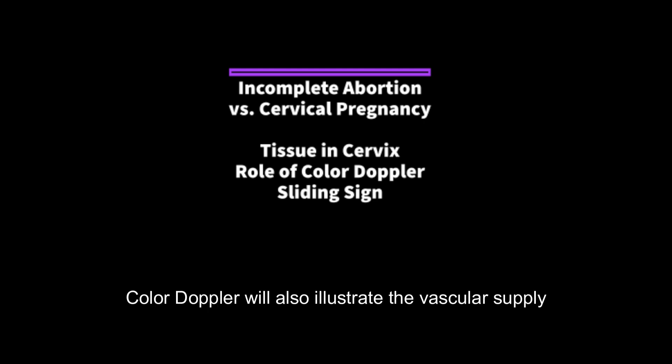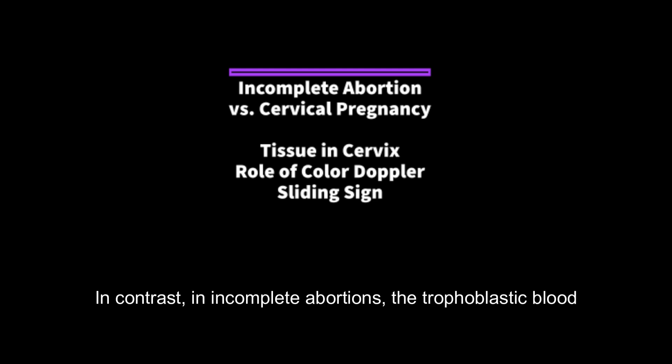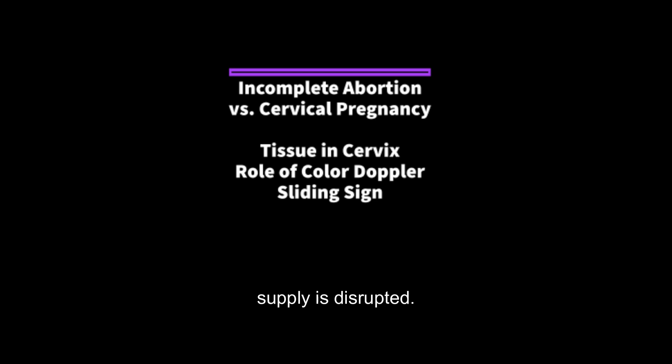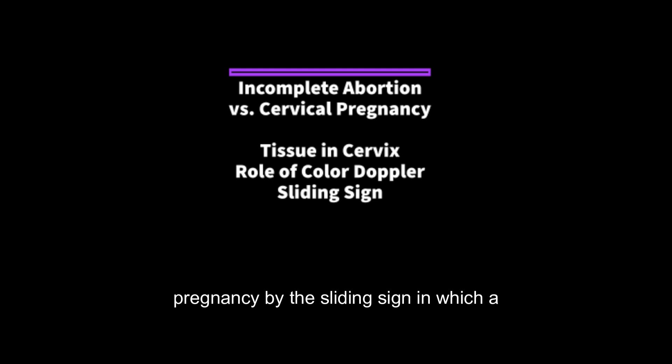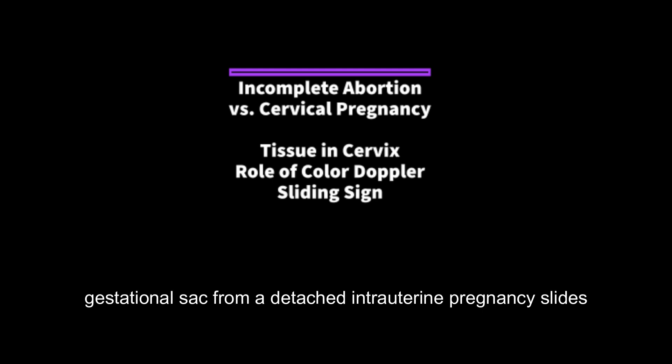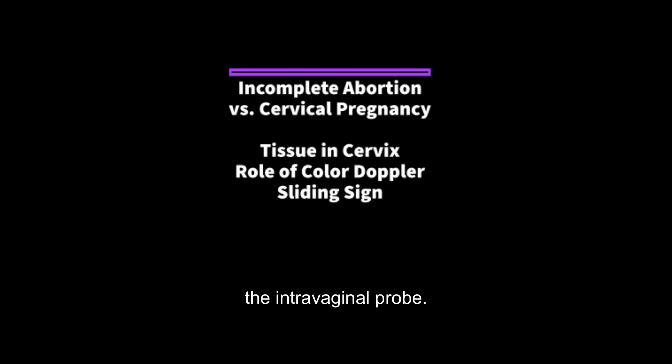Color Doppler will also illustrate the vascular supply to the trophoblastic tissue. In contrast, in incomplete abortions, the trophoblastic blood supply is disrupted. Incomplete abortion may be distinguished from a cervical pregnancy by the sliding sign, in which a gestational sac from a detached intrauterine pregnancy slides towards the cervical canal with uterine pressure on the transvaginal probe.